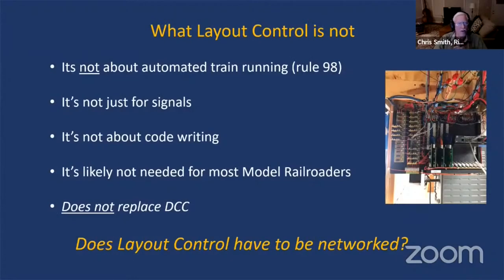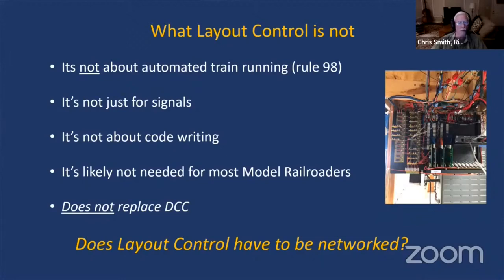It's important to note what layout control is not. Number one — for most of us, at least in North America, it's not about automated train running. I call that Rule 98: if you were to ask me the top priorities for implementing a layout control network, automated train running would be about number 98 out of 100. That's because we are model railroaders — we want to run our trains. It isn't that much fun to have a computer running trains for us.